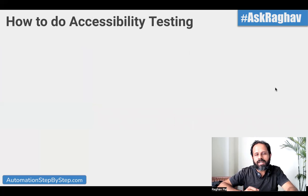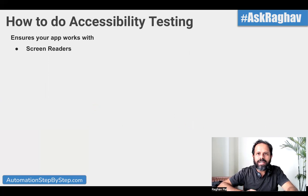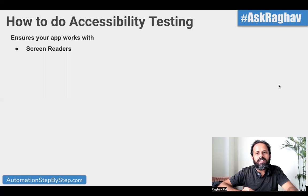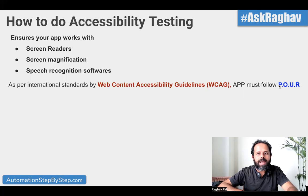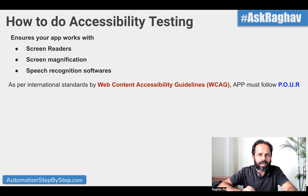How do we do accessibility testing? There are lots of tools and ways to do it. We basically have to make sure that our application works for everyone — especially people with special needs — using screen readers, screen magnification, speech recognition software, and many other techniques and processes. As per the international guidelines by WCAG, our application should follow four standards called POUR.